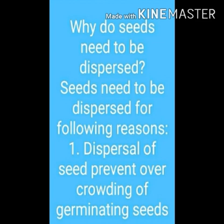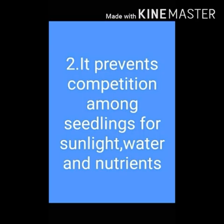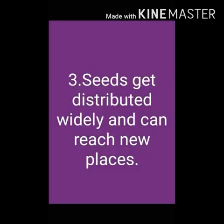Children, plants are fixed to the ground and cannot move from one place to another. If all the seeds fall and germinate near the parent plant, they will not get enough amount of air, water, and sunlight for growth. Therefore, it is necessary for them to grow away from the parent plant. There are some natural agents that help scatter the seeds.